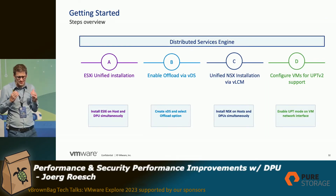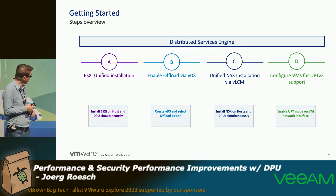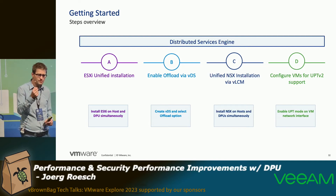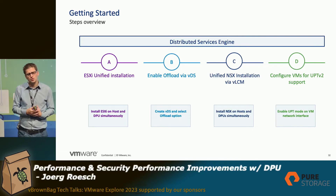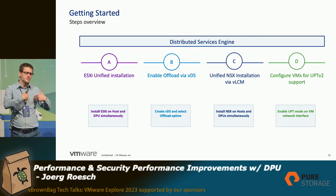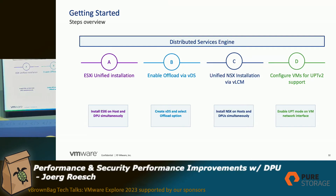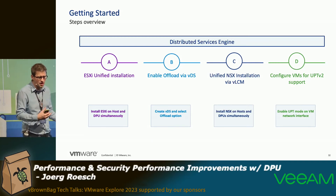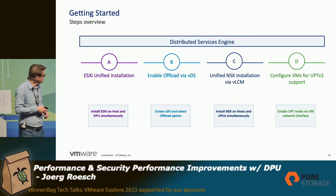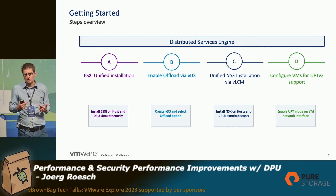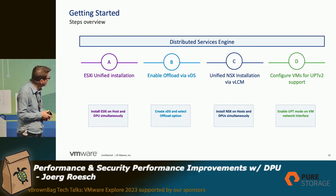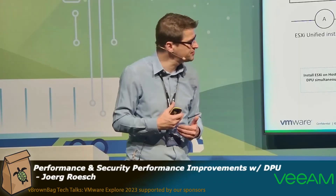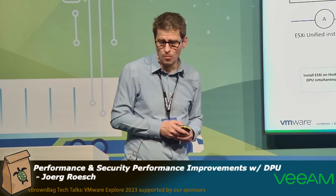Now I come to the installation part — how you install this solution. The first step is you roll out your usual ESXi image, and your DPU card will be automatically detected. You do a check mark on your DPU card, and then the ESXi image will be rolled out to the x86 and to the DPU in parallel. Second step: create a VDS switch, where you also choose NVIDIA or AMD Pensando card. Third step: do the ESXi or NSX VIB roll-out with the lifecycle manager. The last step is the option to activate UBT v2 mode for high-performance requirements. And that's all.